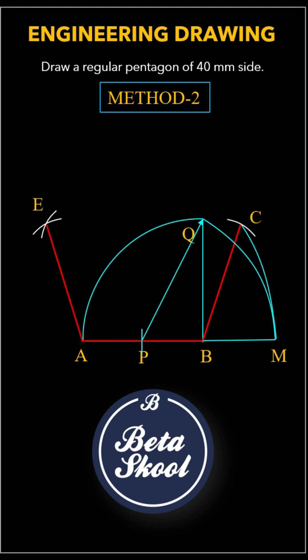Now center the compass at both A and B again, this time using AM as the radius for both. The arcs will intersect at a new point. Label it as point D.